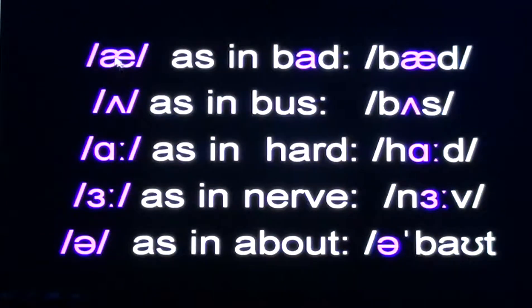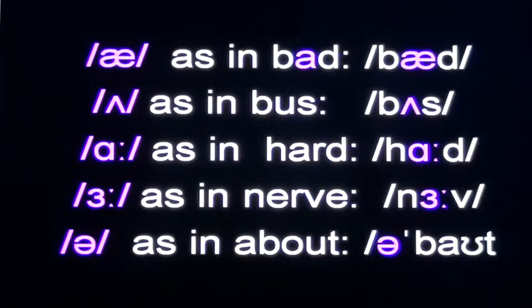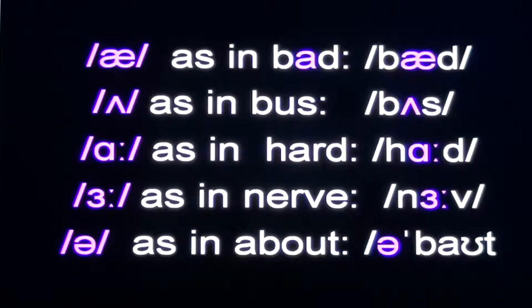There is also the /eɪ/ symbol, and using it would make the word 'late' instead of 'let.' These are all variants of the /a/ sound. There are five variants of the /a/ sound in English, whereas in Hindi there are only two — we say /a/ or /aː/.